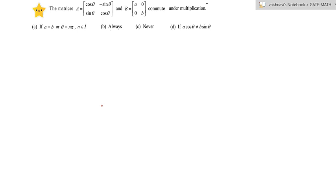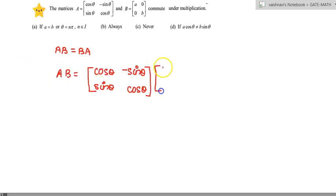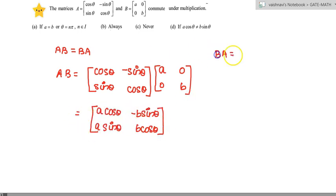They have given you two matrices and the condition is they are commutative. You have to find under what condition they are commutative. That is, AB is equal to BA is what they have given. Let's find AB first. Now let's find BA.